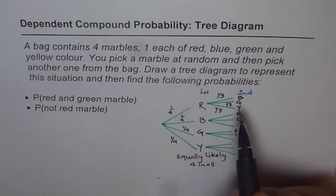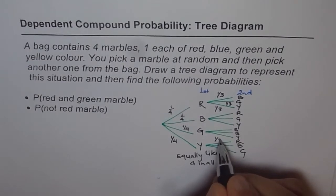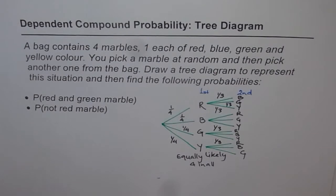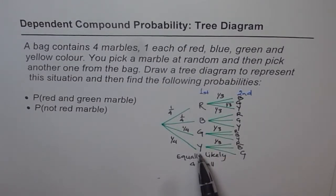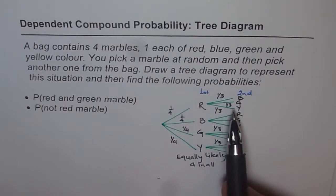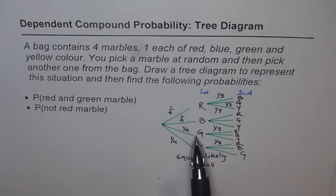For the second set of draws, the probability of each outcome is one-third. So in the first draw, the probability of getting any marble is one-fourth, and in the second draw it is one-third. It is a compound event since there are two draws — two events involved.